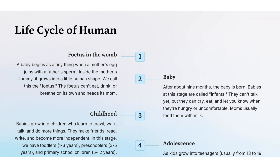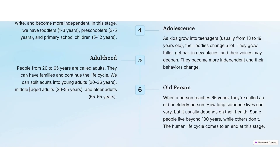Then they enter the childhood stage — babies grow into children who learn to crawl, walk, talk, and do more things. They make friends, read, write, and become more independent. This stage includes toddlers from age one to three years old, preschoolers from ages three to five years, and primary school children from ages five to twelve years old.